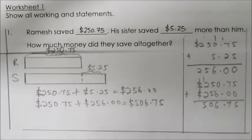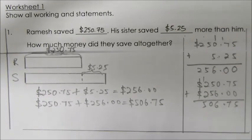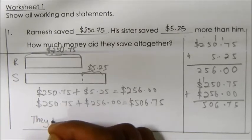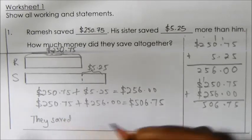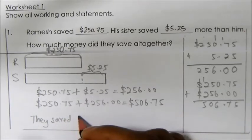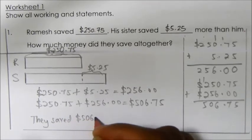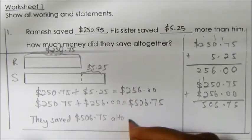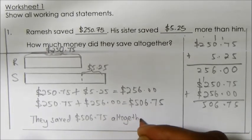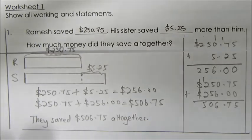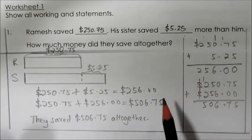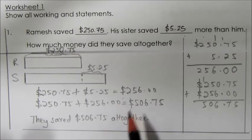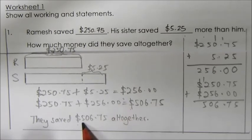Before we end, we need to write the word statement. They saved a total of $506.75 altogether. Remember, since this question involves money, always remember to write the units, which is the dollar sign.